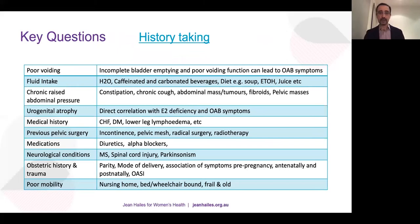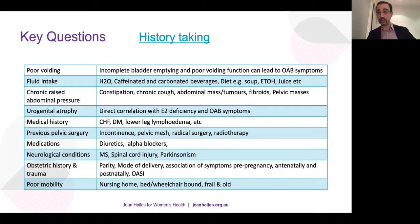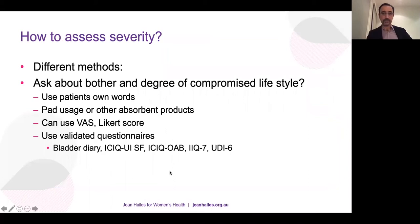Key questions should address poor voiding and incomplete emptying — these can lead to overactive bladder because if you cannot completely empty your bladder you need to go very frequently. Ask about fluid intake: water, caffeinated beverages, diet, soup, alcohol. Ask about chronic raised abdominal pressure: constipation, chronic cough, abdominal masses, fibroids pressing on the bladder causing urgency and frequency. Ask about urogenital atrophy — there is a direct correlation between oestrogen deficiency and OAB symptoms. Medical history should cover fluid overload conditions, previous pelvic surgery, medications, neurological conditions that may lead to neurogenic bladder, and obstetric history.